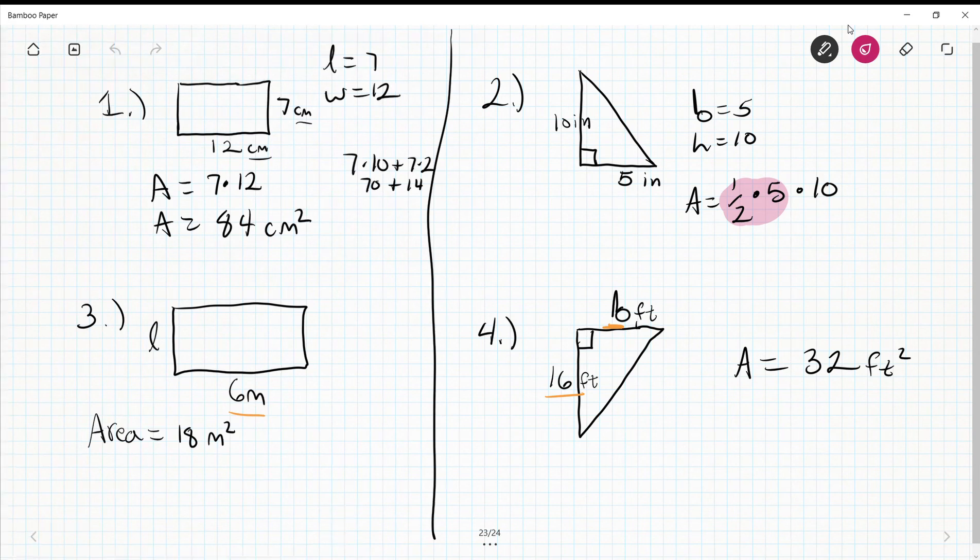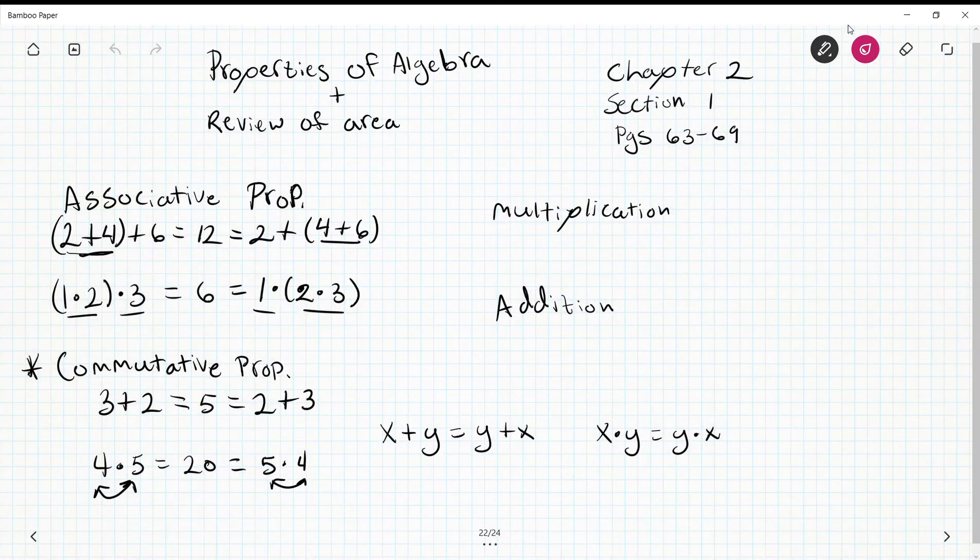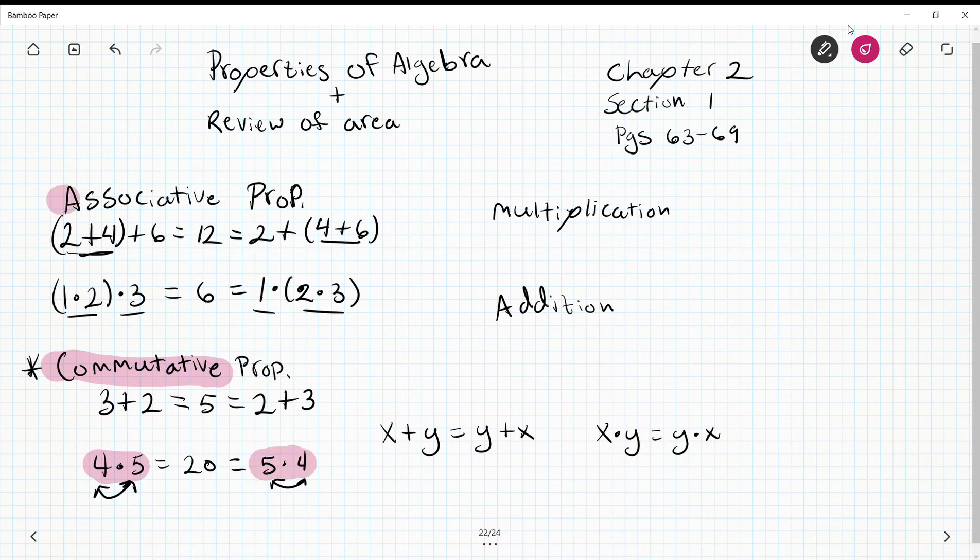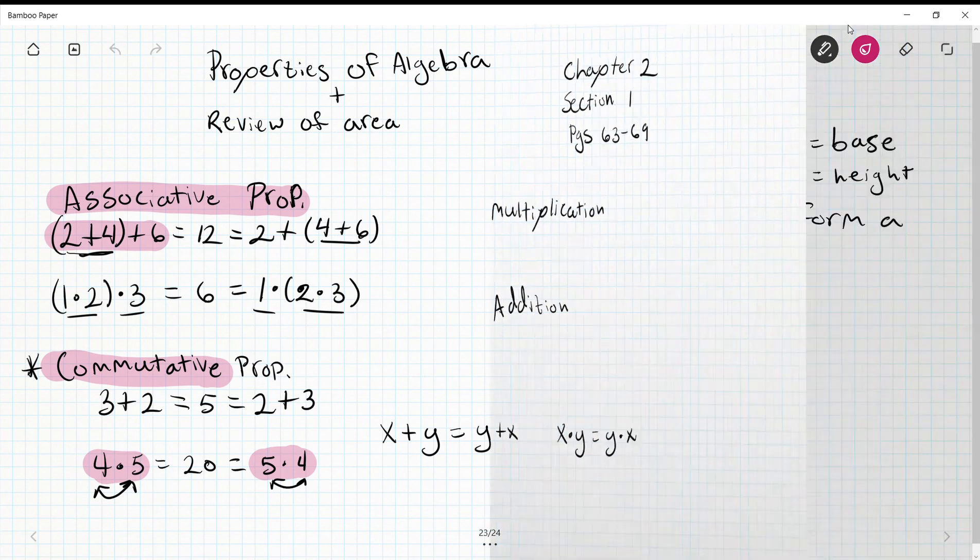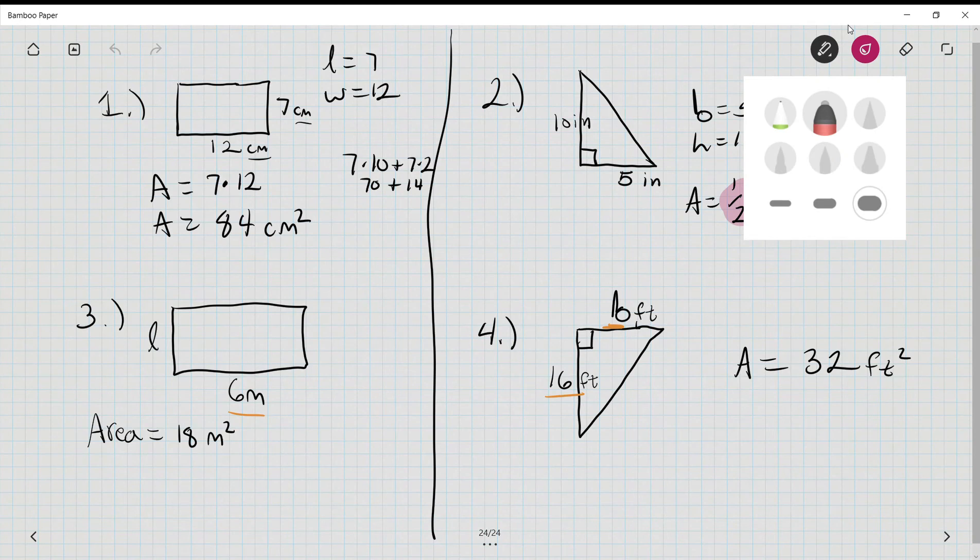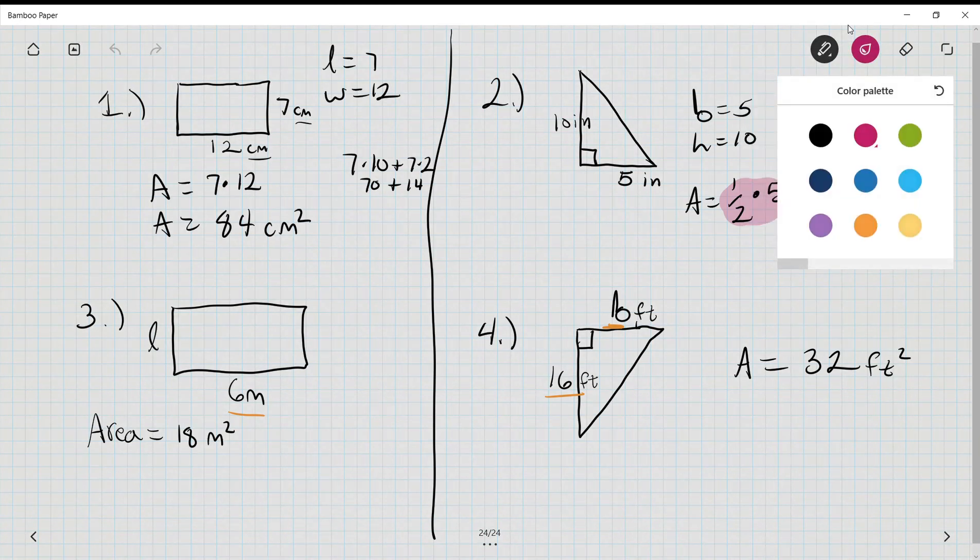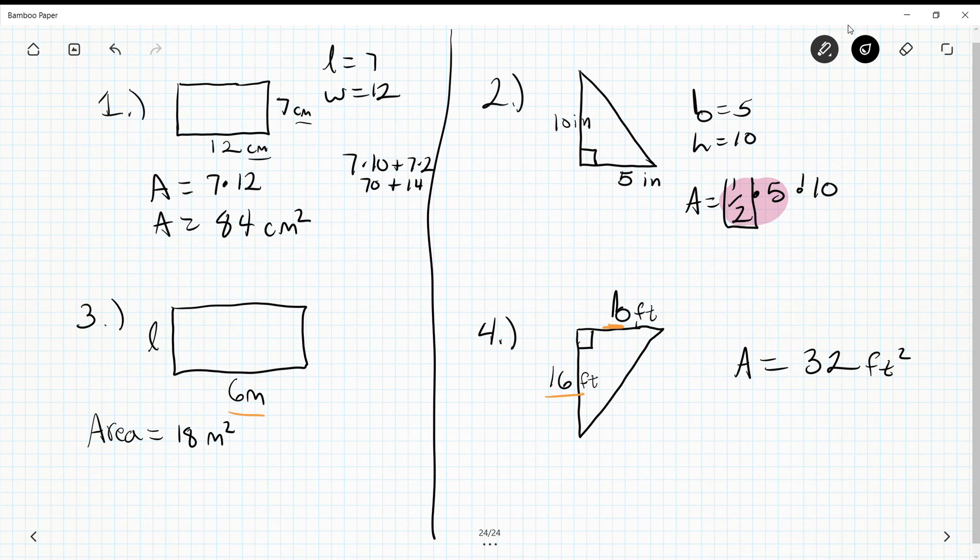What I know from earlier in this lesson is that multiplication is commutative—it does not matter the order. It's also associative, or how I group it. So I could flip this equation around if I want to. In fact, I'm going to flip this. I think it's much easier to take half of 10 than it is of 5. So A equals one half times 10 times 5. Half of 10 is 5, and the area is 25.